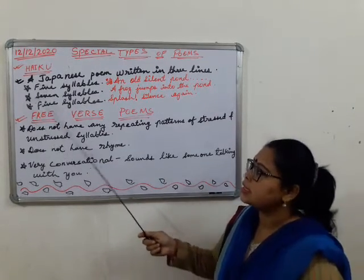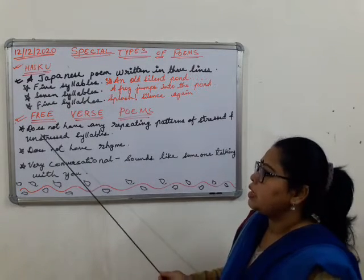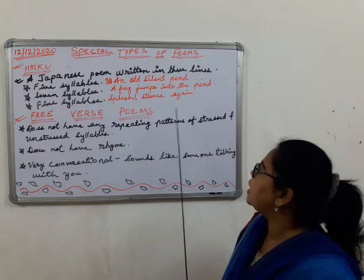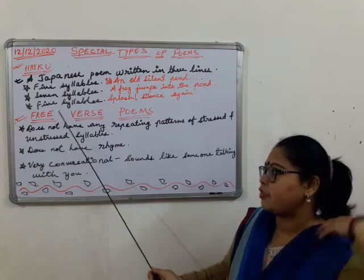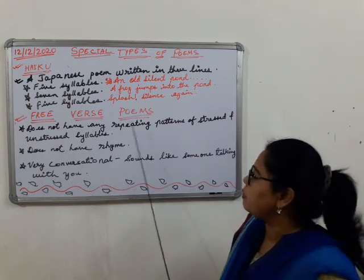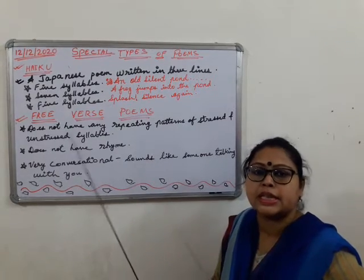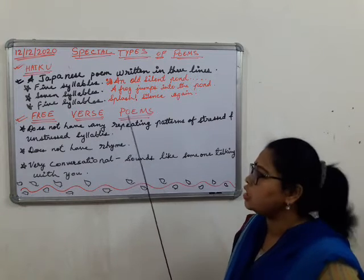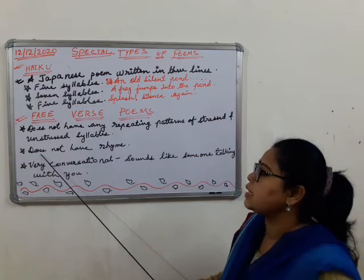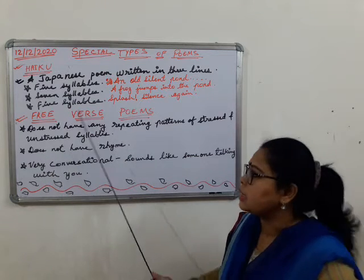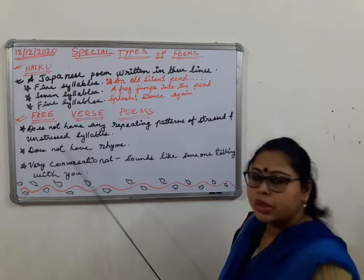Now in this special types of poems, the second is free verse poem. Free verse does not have rhyme, and does not have any repeating pattern of stressed and unstressed syllables. There is no repetition, no stressed and unstressed syllables, and no rhymes in this type of poem.